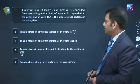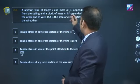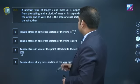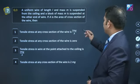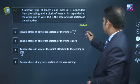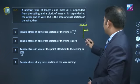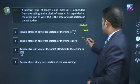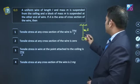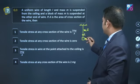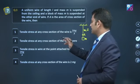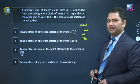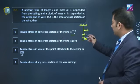Question number 3. A uniform wire of length l and mass m is suspended from the ceiling and a block of mass small m is suspended at the other end. According to the statement, if I make the figure, there is a rope of mass m, length l, and there is a block of mass m which is hanging here. Cross sectional area is A. Let's see. Tensile stress at any cross section of the wire is 2mg by A. This is incorrect because at each cross section, the weight of the rope included will change.